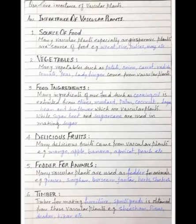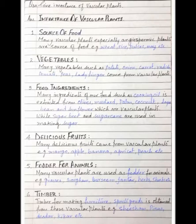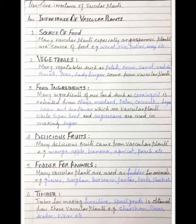The last question: give the importance of vascular plants. Write the heading 'Importance of Vascular Plants' with a black marker. Write these importances in points with headings in black pointer and descriptions in blue. First heading: source of food. Many vascular plants, especially angiospermic plants, are a source of food.